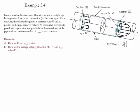Example 5.4. In this example, we have an incompressible laminar water flow which develops in a straight pipe with radius R. At section 1, the velocity profile is uniform and the velocity is equal to a constant value u, parallel to the axis everywhere.